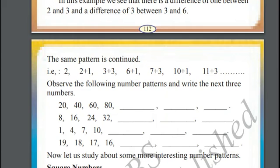Take the first number, add 1 to it, you will get the second number. Take the second number, add 3 to it, we will get the third number which is 6. Take the third number, add 1 to it, we will get the fourth number. Take the fourth number, add 3 to it, we will get the fifth number. This pattern continues.